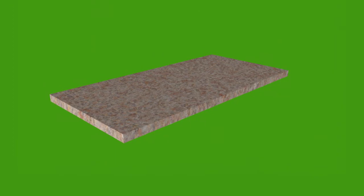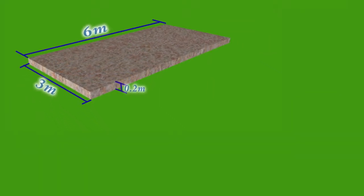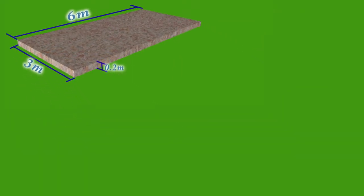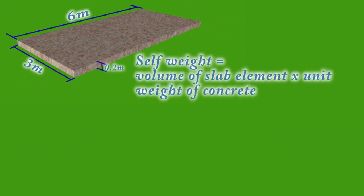For example, a reinforced concrete slab element of length 6 meters, width 3 meters, and thickness 0.2 meters. Self-weight can be calculated as follows: self-weight equals volume of slab element times unit weight of concrete.